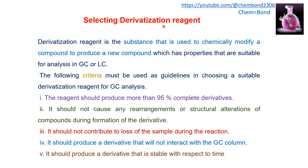Selecting a derivatization reagent. What is a derivatization reagent? It is a substance used to chemically modify a compound to produce a new compound with properties suitable for analysis in GC and LC. These chemical reagents react with the analyte to produce a derivative. There are some criteria for selecting a derivatization reagent. The first criterion is that the reagent should produce more than 95% complete derivatives — the reaction should be complete up to 95%.